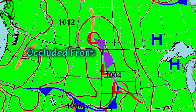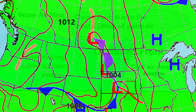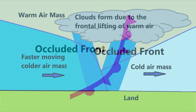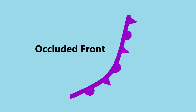An occluded front is a composite of two frontal systems that merge as a result of occlusion. Cold fronts generally move faster than warm fronts, so the cold front will overtake a warm front and force it aloft. An occluded front is represented as a purple line with triangles and semicircles.